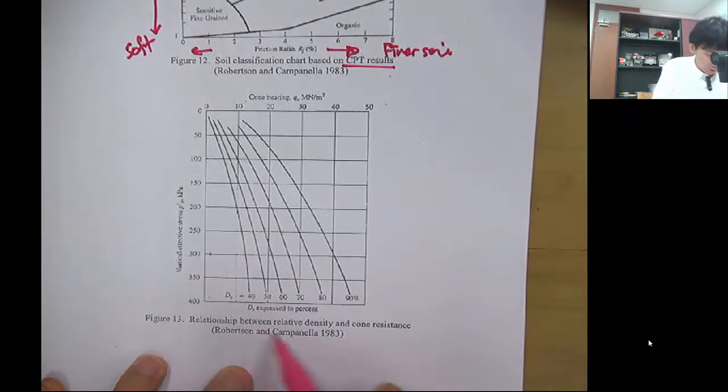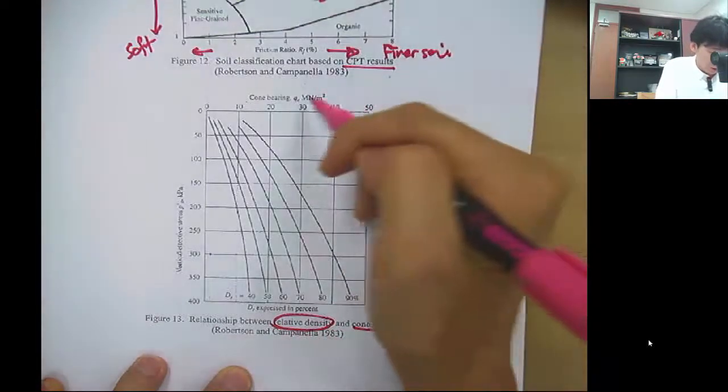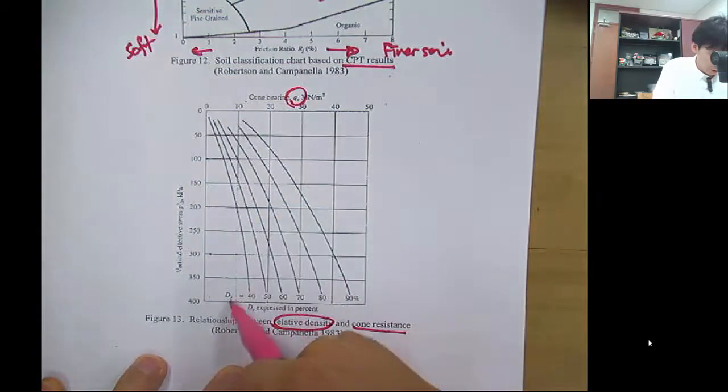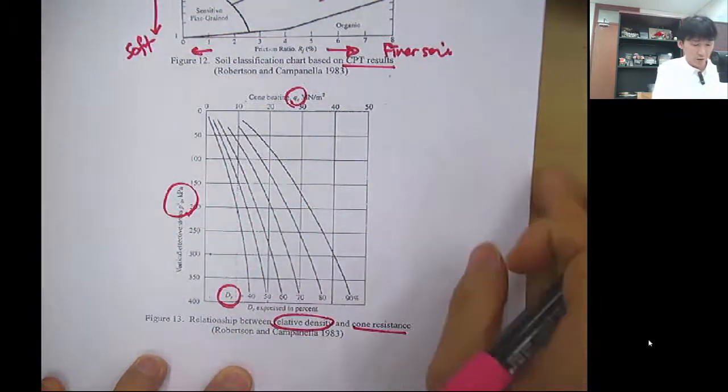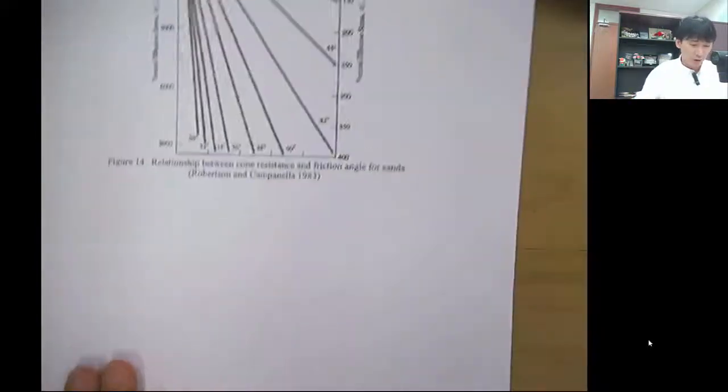Here shows the relationship between the relative density and the cone resistance. QC over the relative density Dr with the vertical effective stress. This can be a good chart.